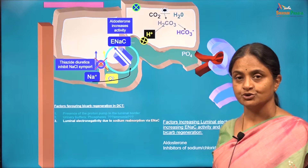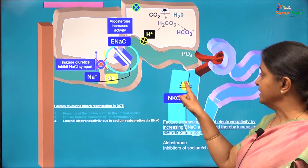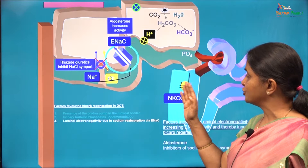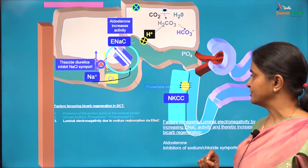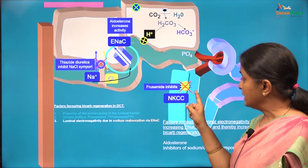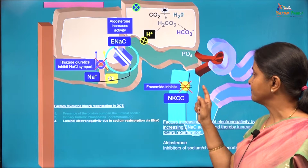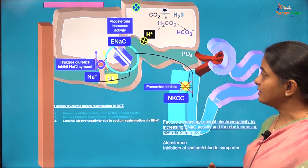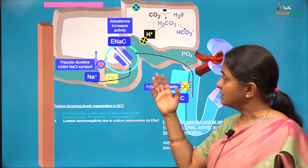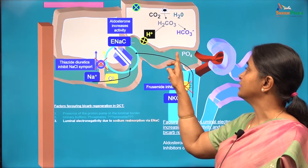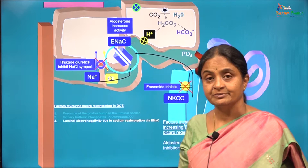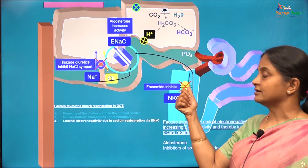Similarly, in the loop of Henle, the transporter on the luminal border absorbing sodium is a sodium-potassium-2-chloride symporter. A common diuretic, frusemide, acts by inhibiting this transporter. If sodium is not taken out of the tubule at the loop of Henle, all that sodium will arrive at the distal tubule and will have to be reabsorbed by both ENaCs and the sodium-chloride symporter. Any enhanced transport via ENaCs will increase luminal electronegativity, pull down more protons, and provide more bicarbonate to plasma resulting in alkalosis. Frusemide — the loop diuretic — will also result in alkalosis.